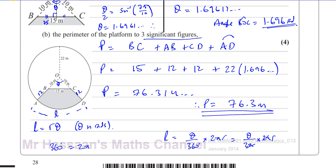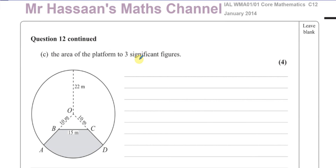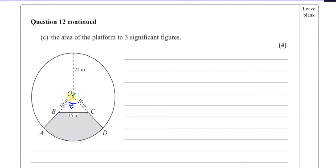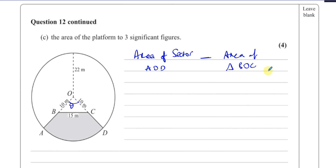Part C asks us to find the area of the platform to three significant figures. We know angle theta. If you think about the whole figure, you have a sector of a circle with a triangle inside it. If you take the area of triangle BOC away from sector AOD, you're left with the shaded platform area.